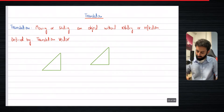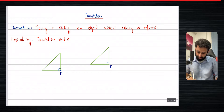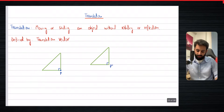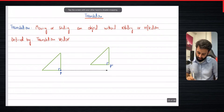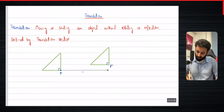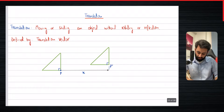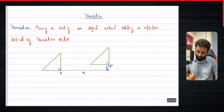Let's take a point — this 90-degree point — and call it P, and call the image point P prime. We can clearly see that this point has moved a certain number of units to the right horizontally, and a certain number of units upwards vertically. The horizontal movement is determined by the x component of the translation vector, and the vertical movement is determined by the y component.